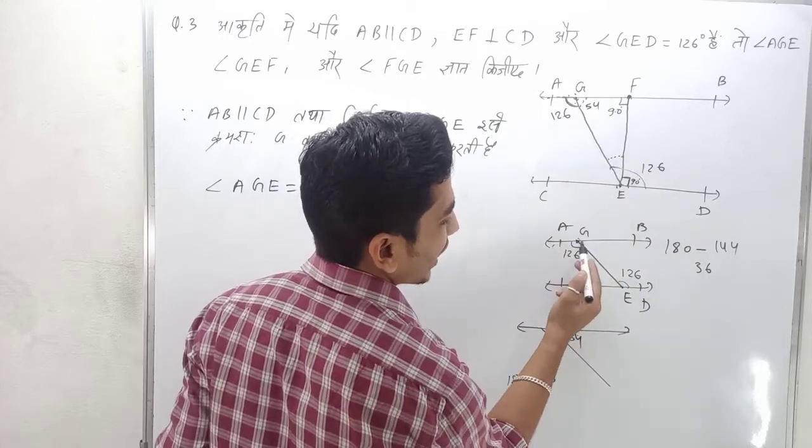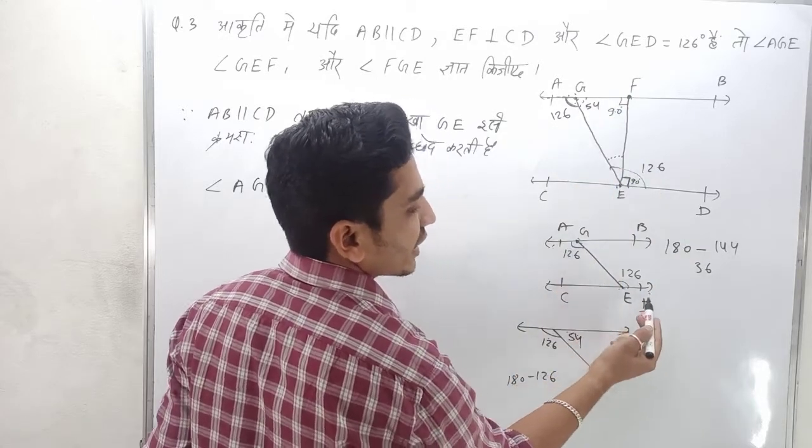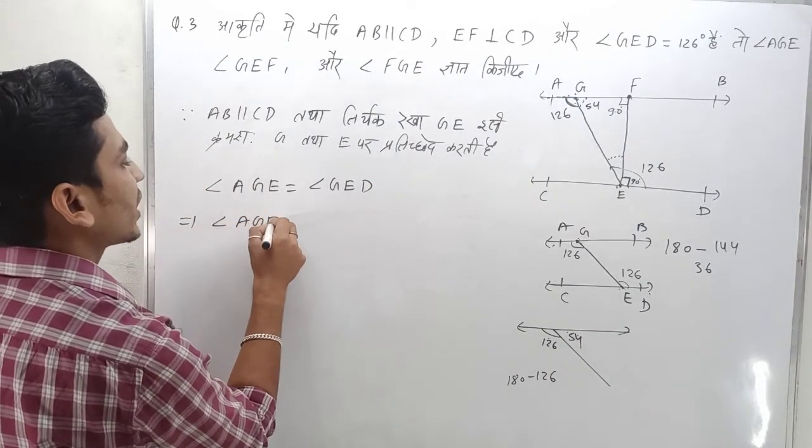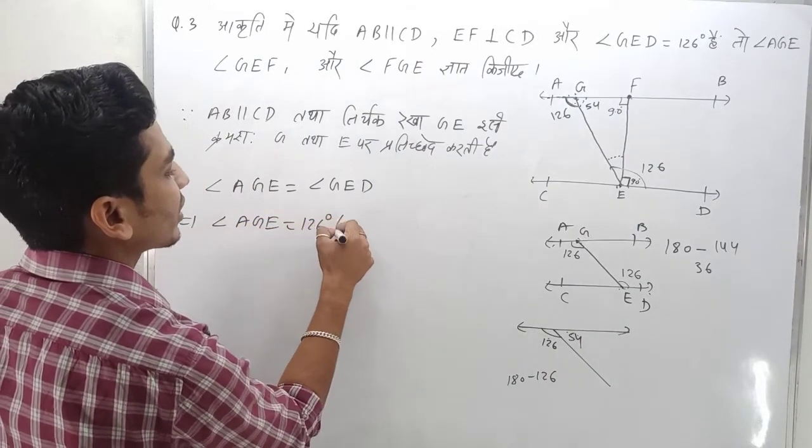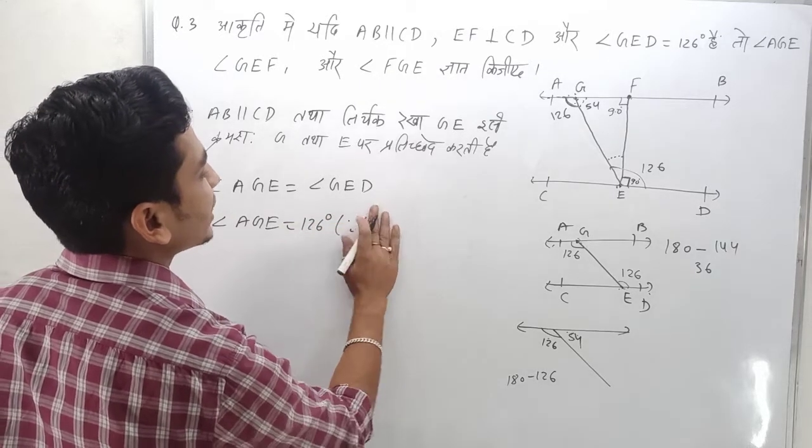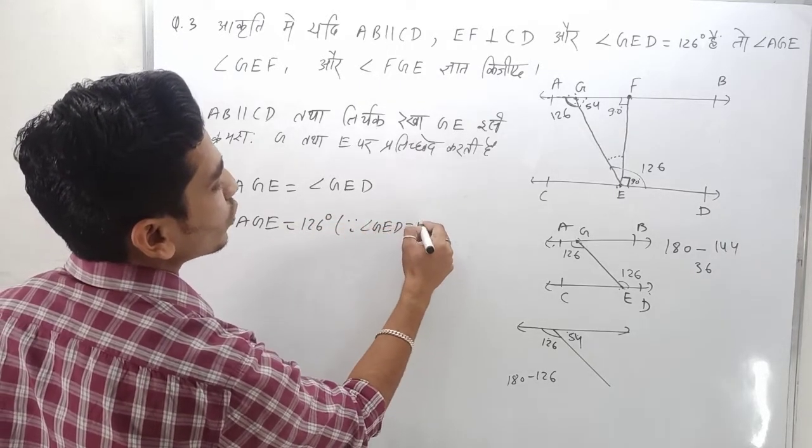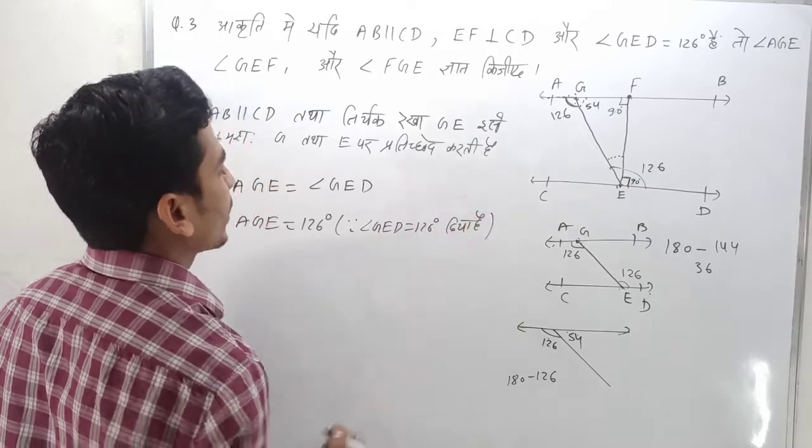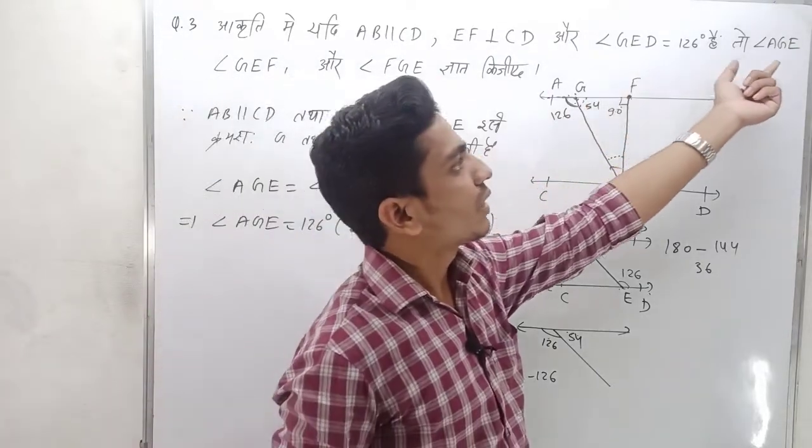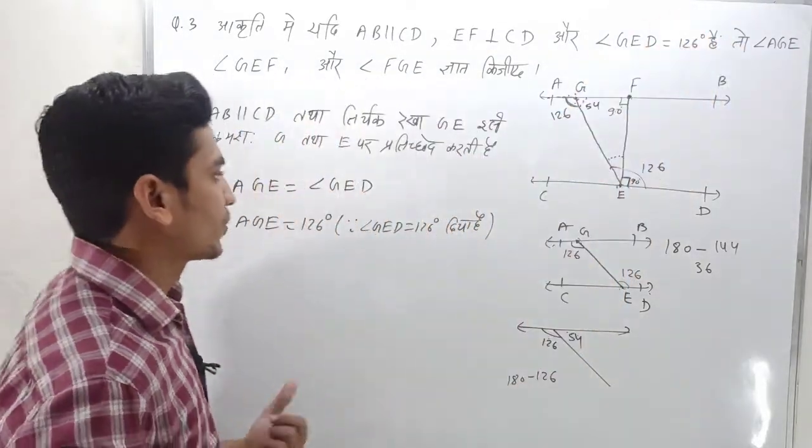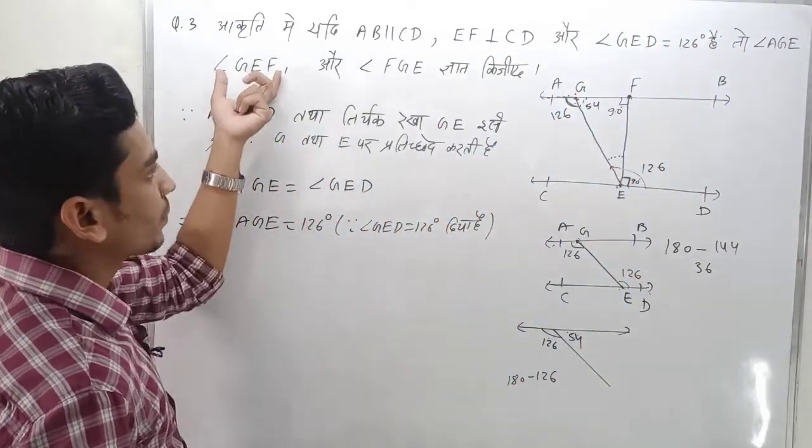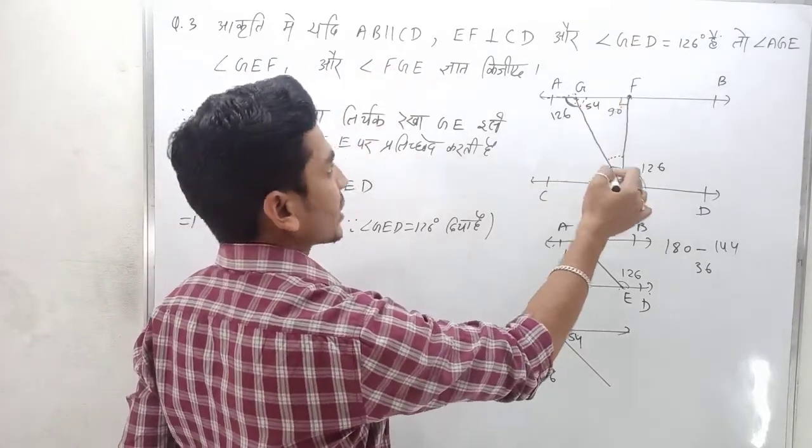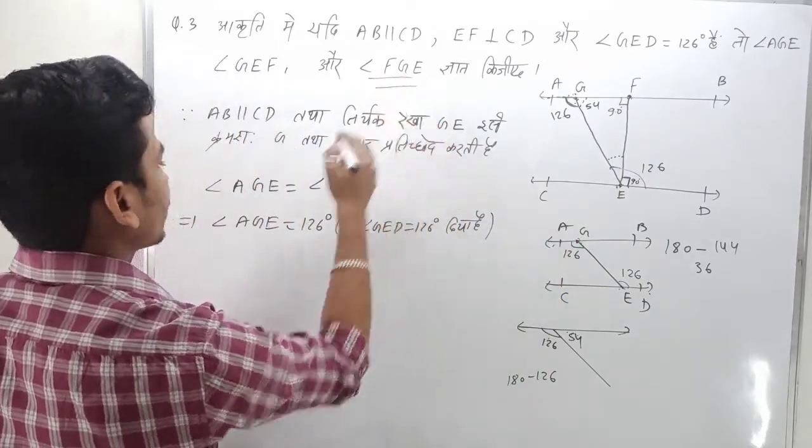This angle is 126 degrees because it's given. So angle AGE is 126 degrees. Now for the second part, GEF and FGE. First I'll show you FGE.